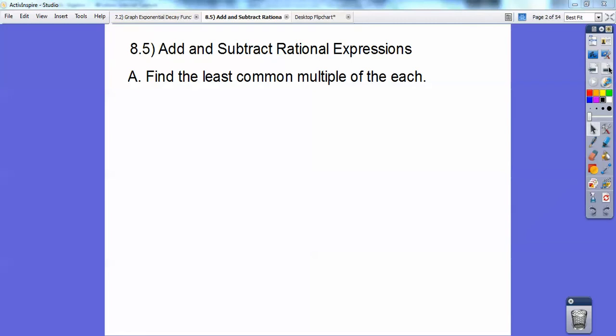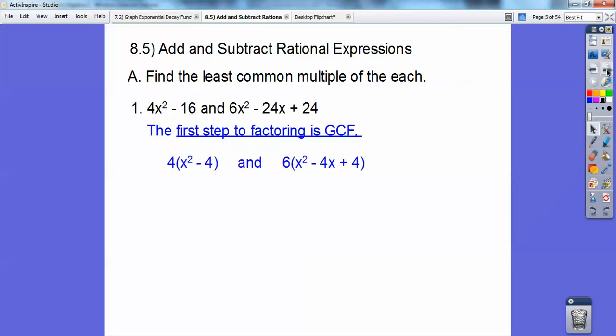So, find the least common multiple of each. 4x² - 16 and 6x² - 24x + 24. This whole chapter, whenever you see polynomials, think factoring. Yes, that F word. Always, always, always, your first step of factoring is to pull out a GCF. So, I'm going to pull a 4 out of the 4x² and the 16, and I'm going to pull a 6 out of all of these, and I get these guys right here.